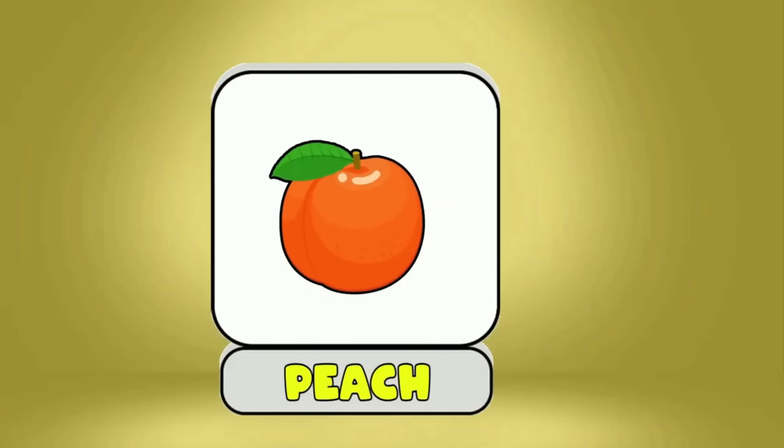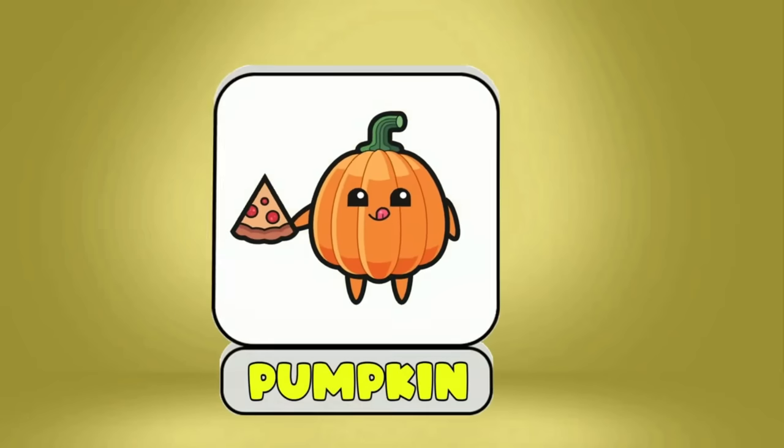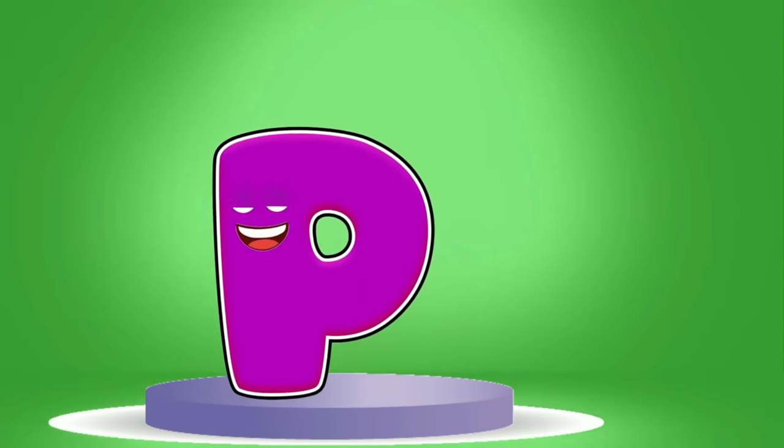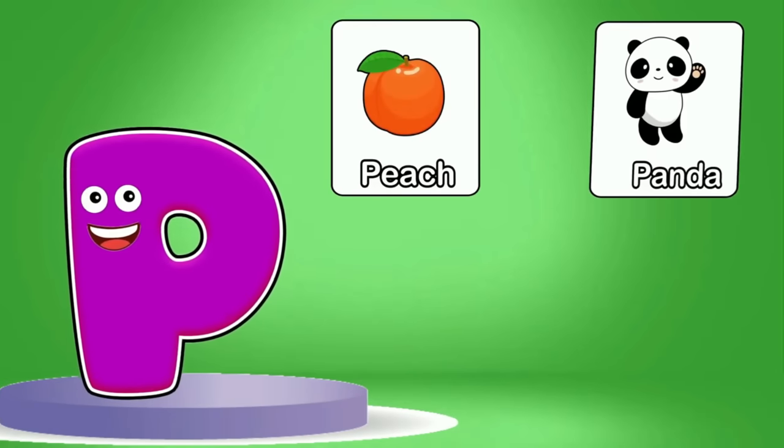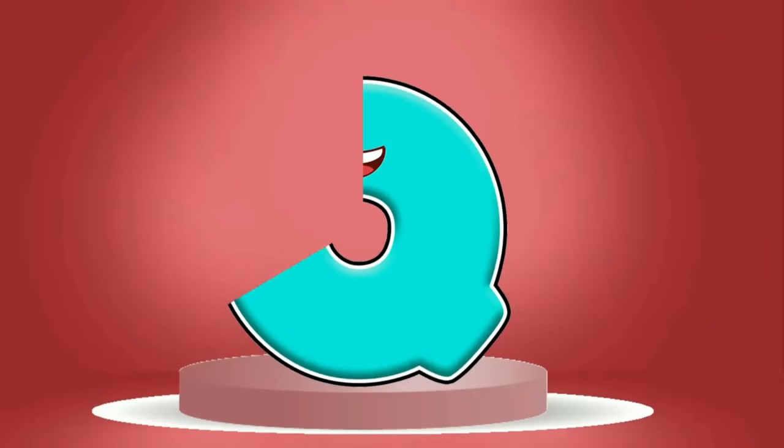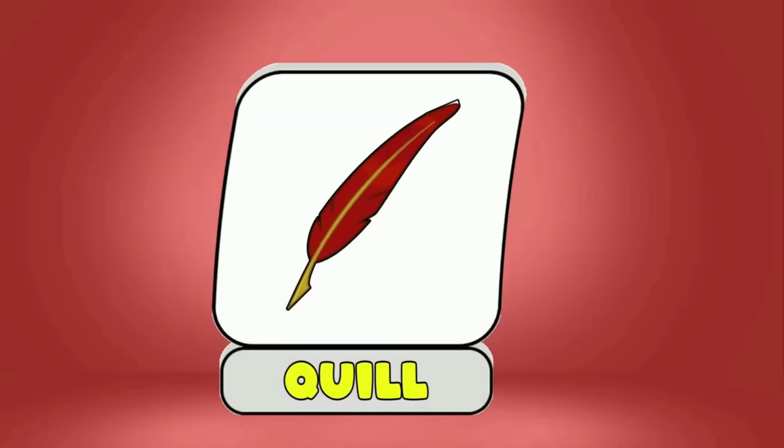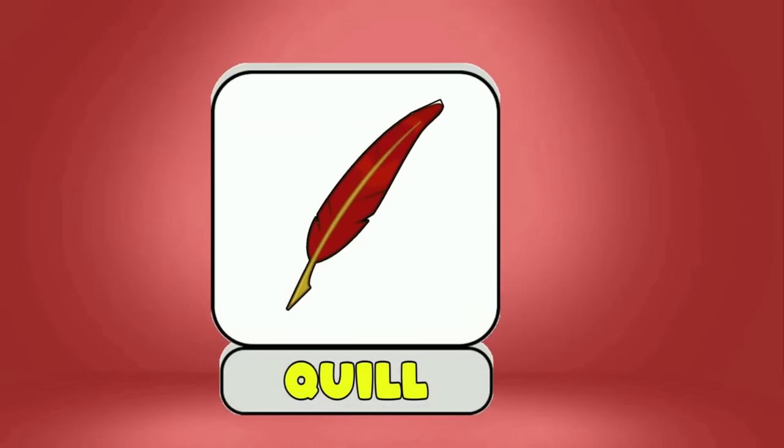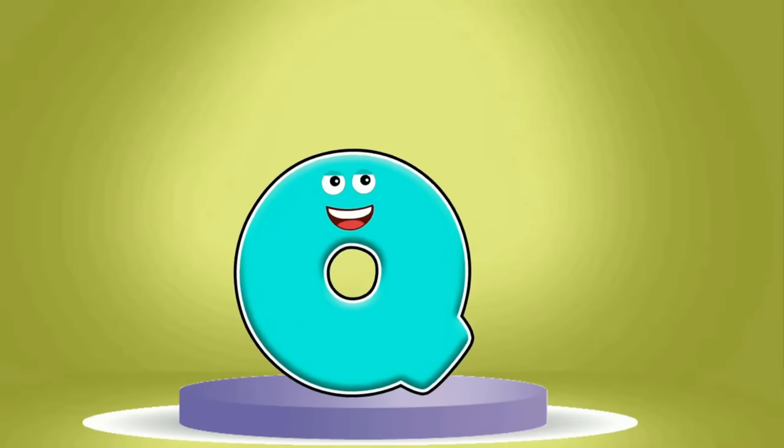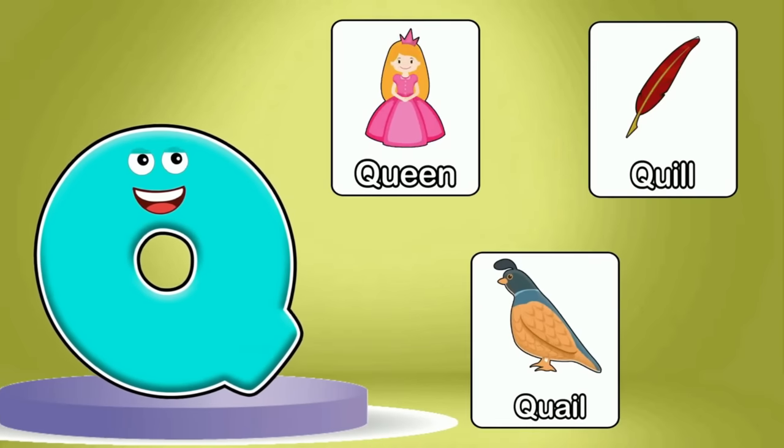P is for Peach, Panda, Pumpkin. This is Q. Q is for Queen, Quilt, Quail.